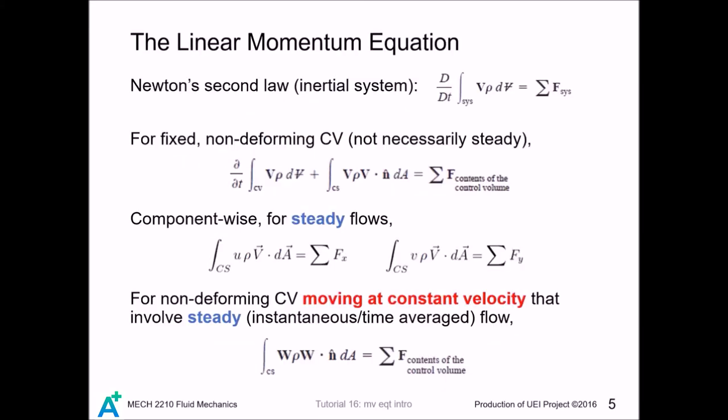If we simplify the previous slide with Newton's second law, we will eventually get this relation. If the flow is steady, then any partial ∂/∂t goes to 0. So this term goes away, and we are left with this equation. But in fact, we can further decompose this result into x, y, z component.